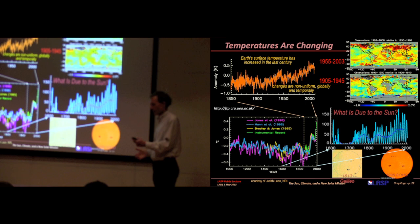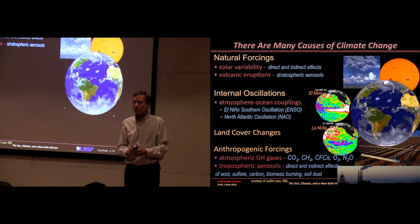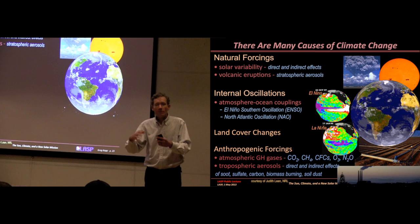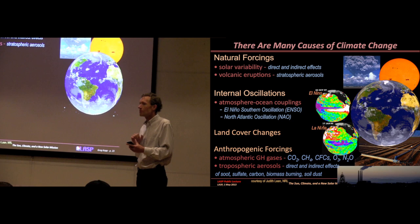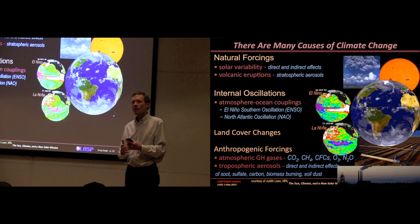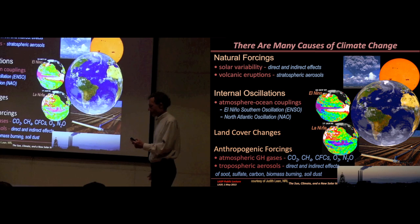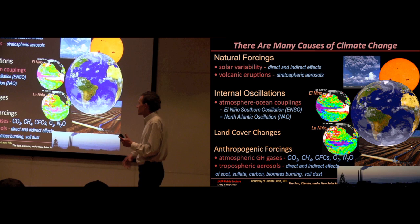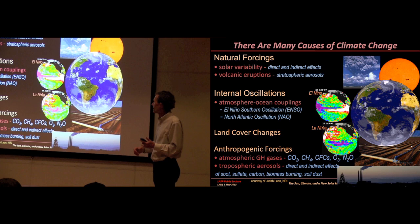We can take those temperature records back in time with proxies. What we'd really like to know is how much of temperature changes are caused by humans and how much are caused by natural things we can't regulate. How much is due to the sun? There are a lot of things that cause climate change. The sun is one natural forcing. The other is volcanoes - eruptions can put up enough dust and sulfates to block incoming radiation and cool things off. There are natural oscillations in the earth, like El Niño. Different circulation patterns in the ocean. Land cover changes - deforestation affects how much energy is absorbed. And anthropogenic forcings - atmospheric greenhouse gases we're putting into the atmosphere. All of these can affect climate.